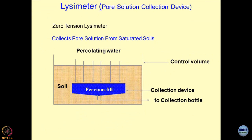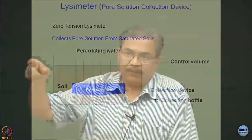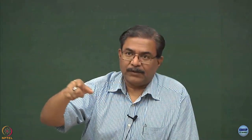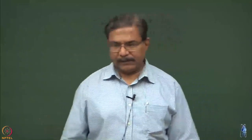One way to collect pore solution is to saturate the soil sample and then squeeze it or do a consolidation test. You saturate the soil sample, compress it in a regular consolidometer ring, and make arrangements so that rather than keeping the water inside the ring, you allow the pore solutions to come out. The pore pressure dissipates and the pore solution which comes out is the pore solution from the saturated soils — this is a simple device which you can devise.